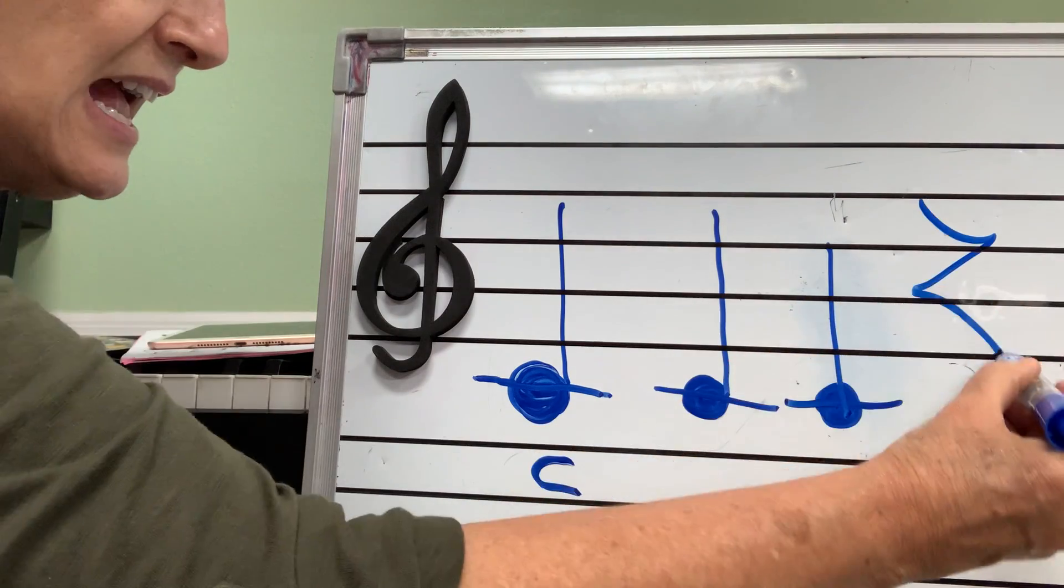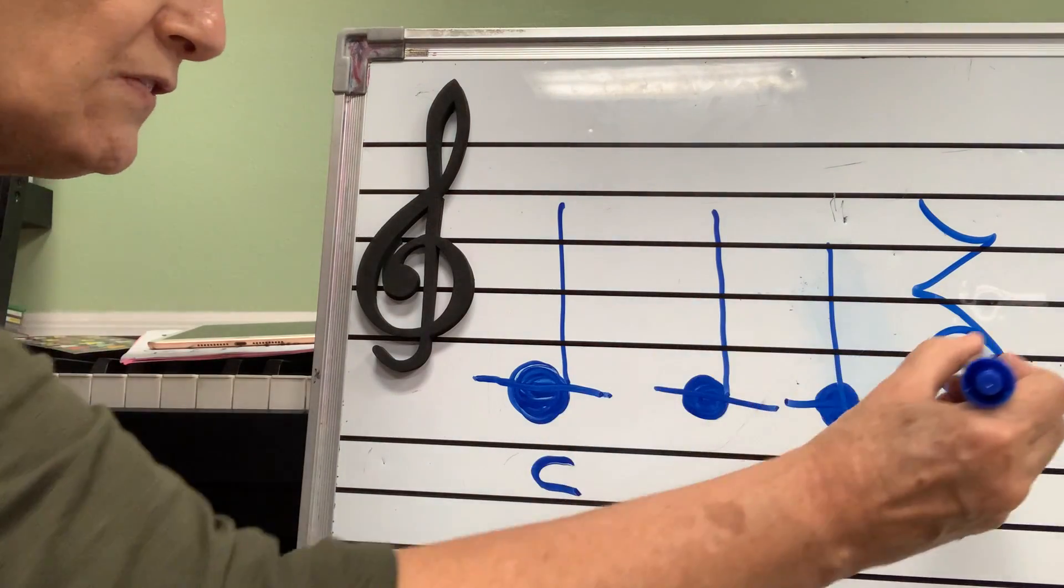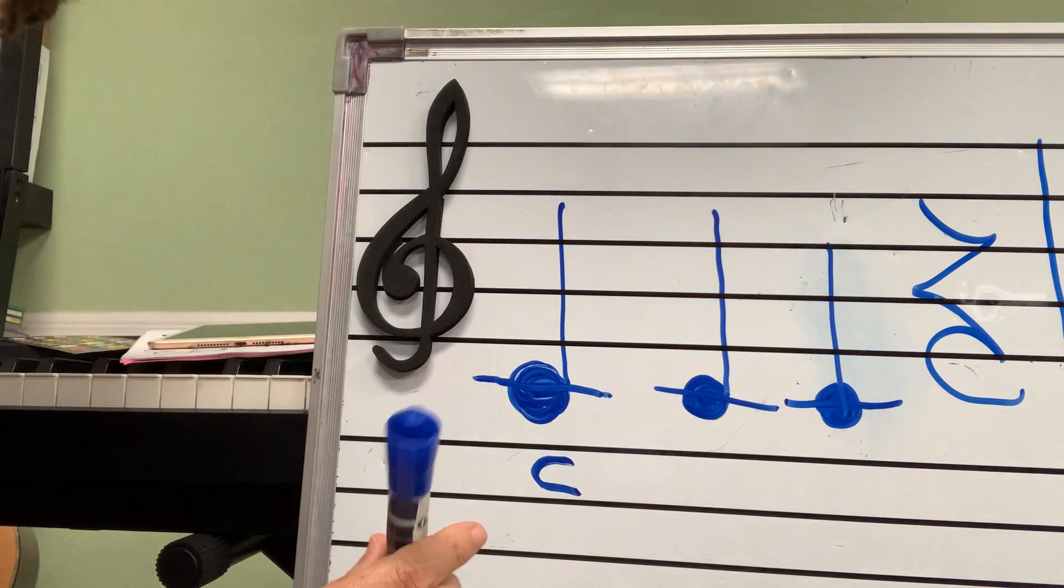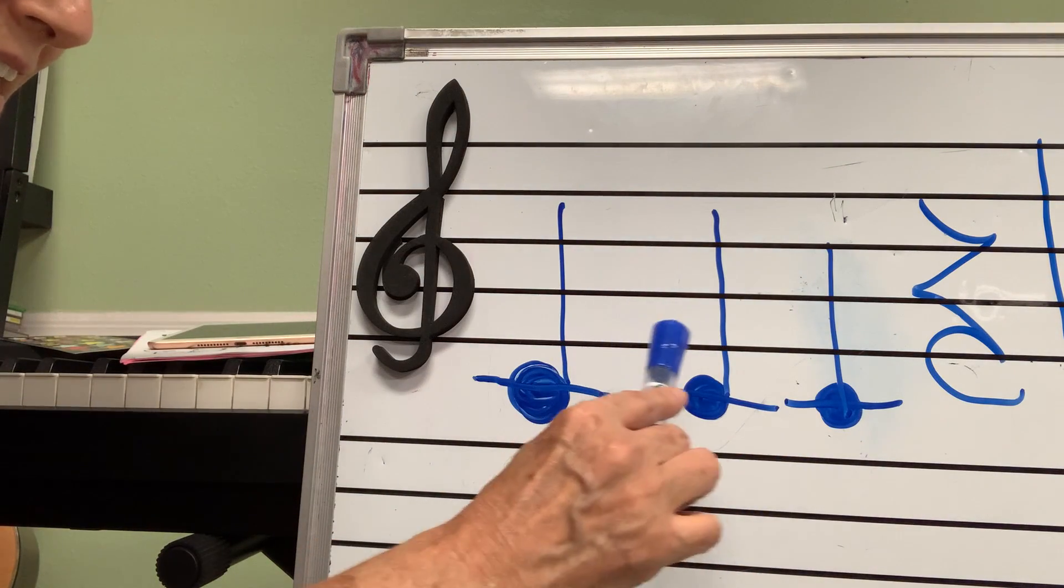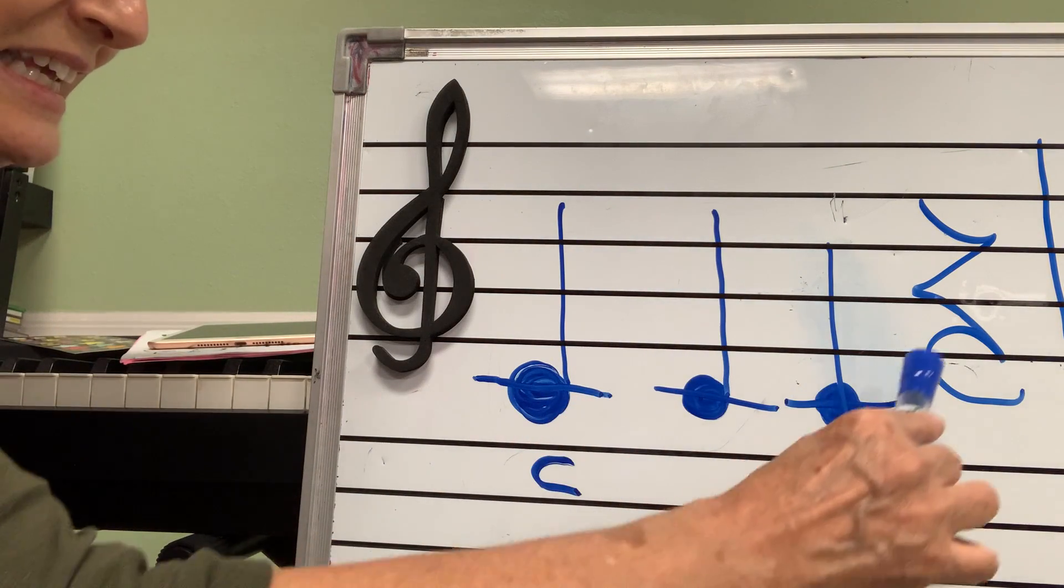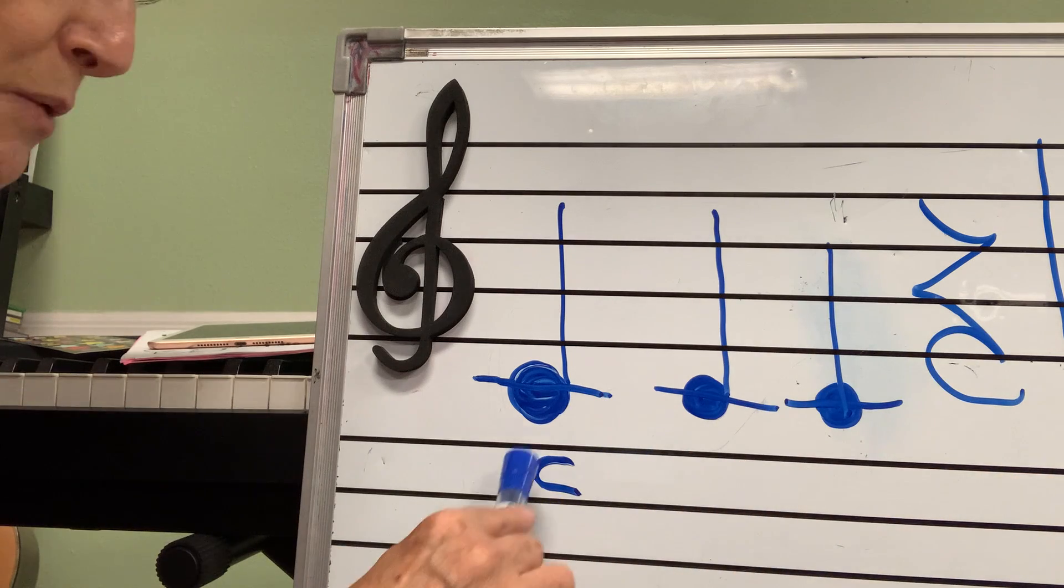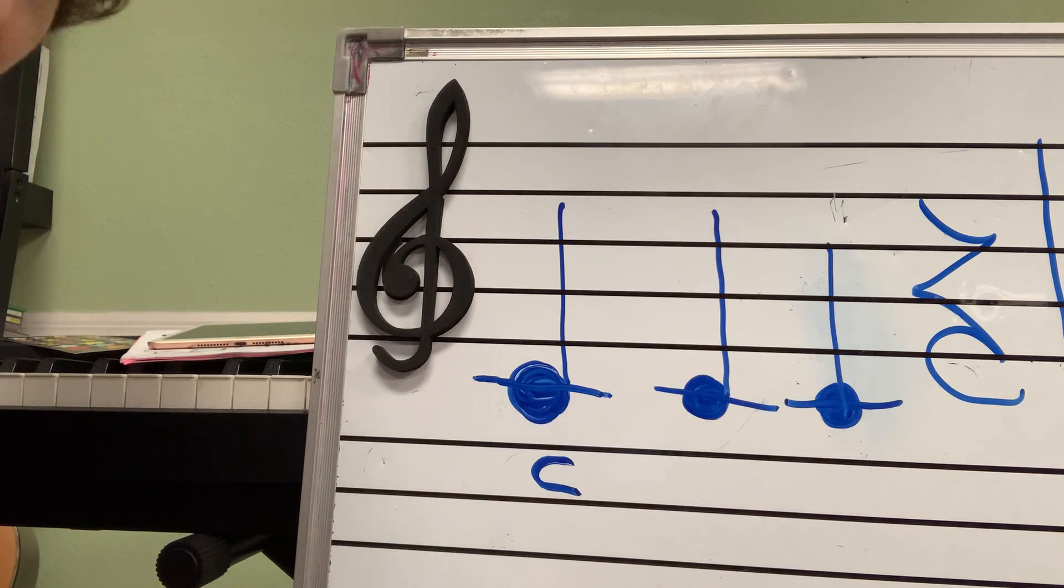And this one is a sh. One, two, three, four. Close my box. Let's try this one. C, C, C. And when you see this note C, you have to play on the piano the note C.